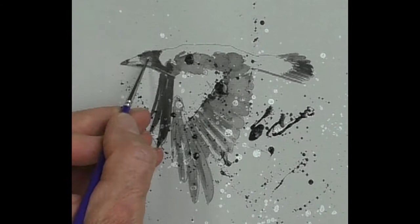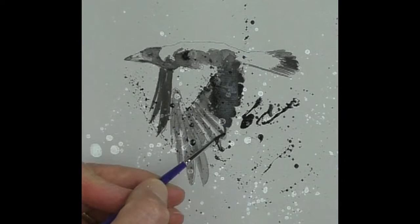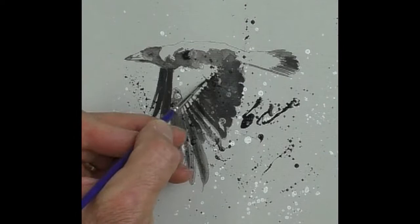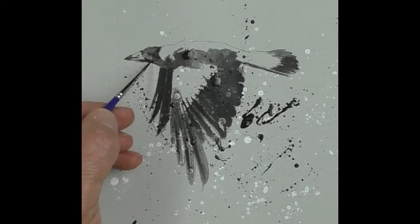The easiest way of doing this is to build it up in layers. So I'm gradually adding more ink to it to make it darker, and then just building up the different tones on the feathers.